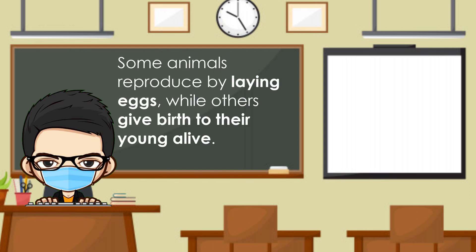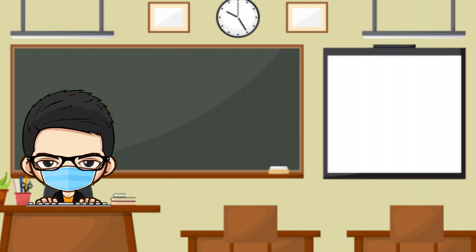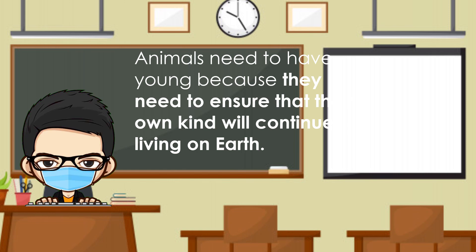Some animals reproduce by laying eggs while others give birth to their young alive. Animals will have more of their kind. Therefore, animals need to have young because they need to ensure that their own kind will continue living on Earth.